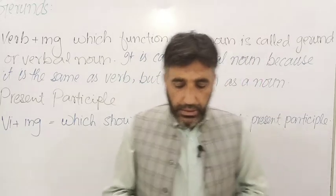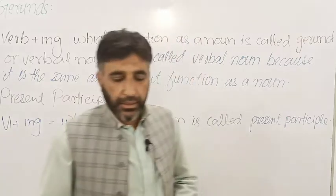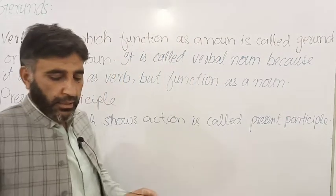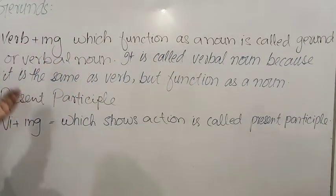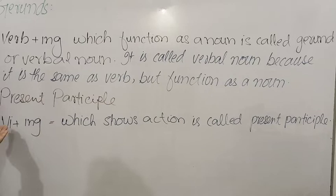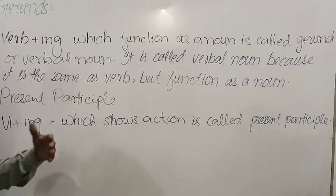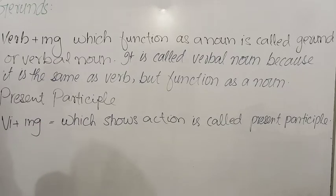So dear students, in this activity we are talking about gerund. Gerund means masdar in Urdu. When we use gerund, it is verb first form plus -ing. But verb first form plus -ing is also sometimes present participle. How do we differentiate between present participle and gerund? Both have the same structure: verb first form plus -ing.